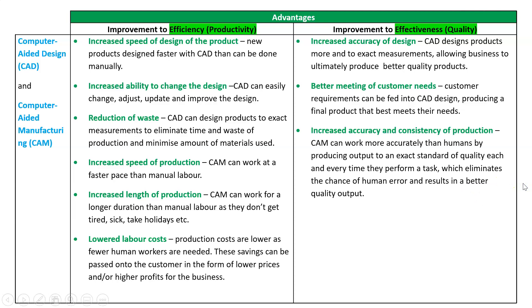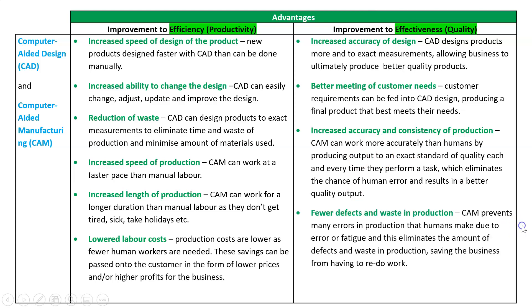We also get greater accuracy and consistency of production. Like with automation, computer-aided manufacturing works more accurately than humans to an exact standard, and does the exact same thing every time it performs a task to the exact same standard. Therefore, we get a better quality, more accurate final product. And lastly, we're going to get fewer defects and waste. If a machine is making everything, there's no human error, there's no fatigue — we're going to waste fewer resources and produce a better quality product.